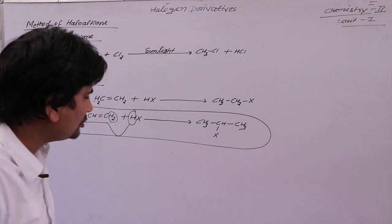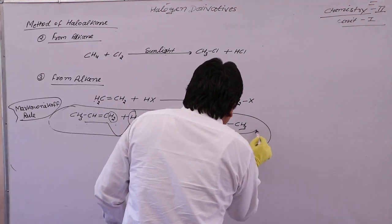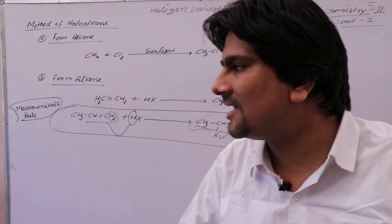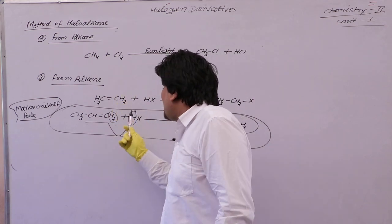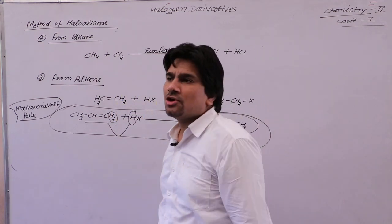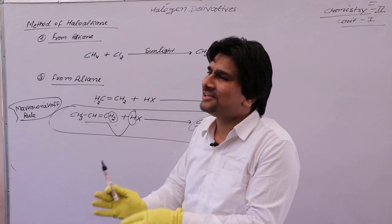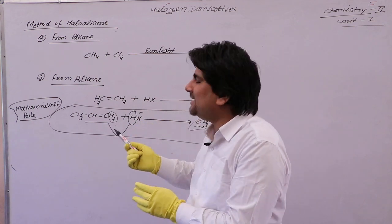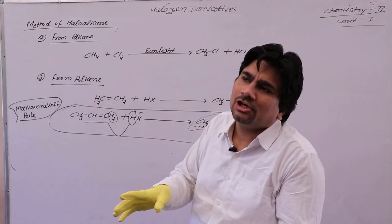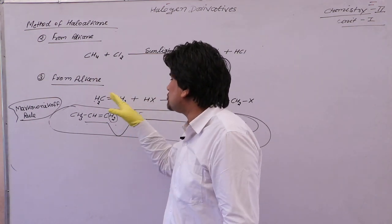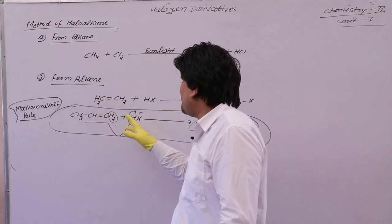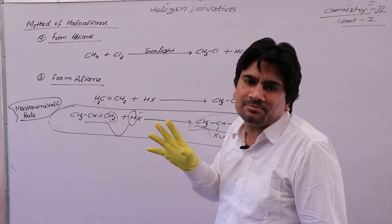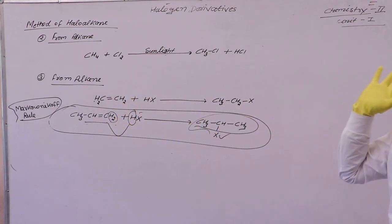The product is CH₃CH(X)CH₃. The trick is: hydrogen is plus, and plus in mathematics means more — so hydrogen goes to the carbon with the highest number of hydrogens. X is minus, meaning X goes to the double-bonded carbon with the lowest number of hydrogen atoms. This is called Markovnikov's rule.